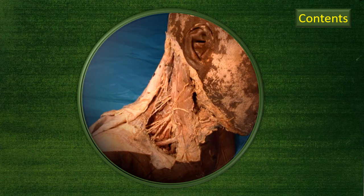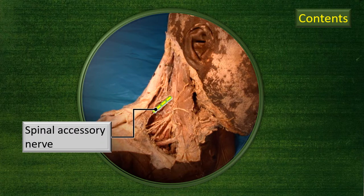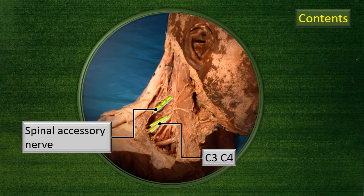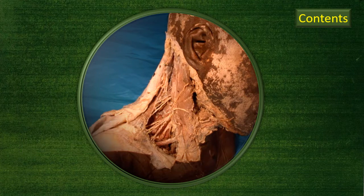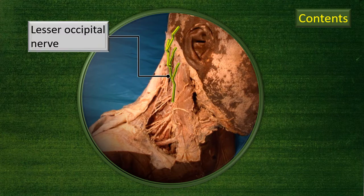Below the spinal accessory nerve are the C3 and C4 sensory branches. The cutaneous nerves emerge from the posterior border of the sternocleidomastoid at roughly the junction of the upper one-third and lower two-thirds of the posterior border. The highlighted nerve here is the lesser occipital nerve.